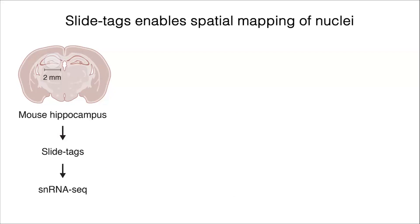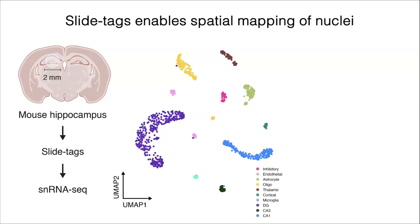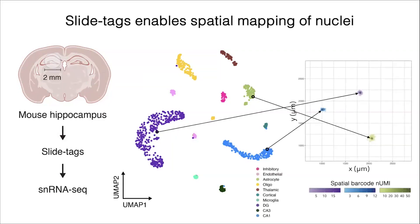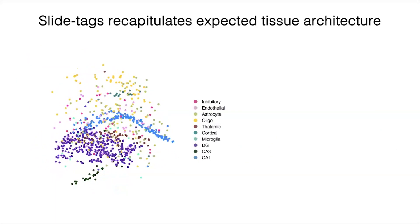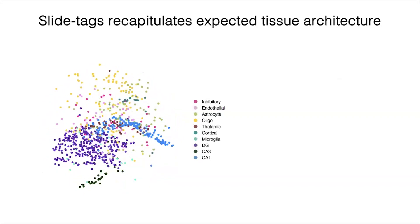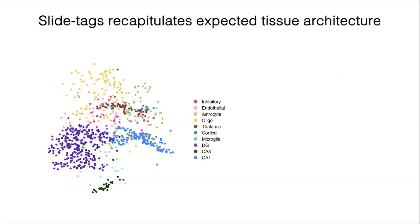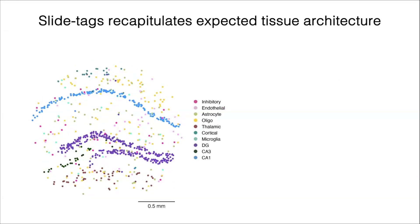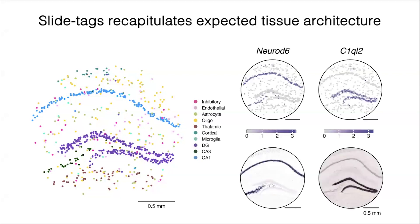To validate slide tags, we turned to the mouse hippocampus, which has a stereotyped architecture. From the single cell data we derive, we can make dimensionality reduction plots such as a UMAP. With slide tags, we can localize these nuclei — taking cell types in the UMAP and finding where their spatial barcodes are located in XY space, forming tight Gaussian distributions. We can then move easily between real XY space and dimensionality reduction space, recapitulating expected cell types and gene expression patterns consistent with the mouse Allen Cell Atlas in situ hybridization data.